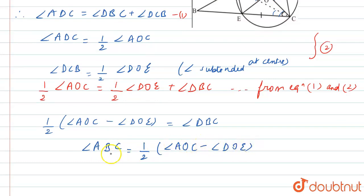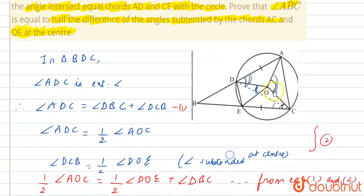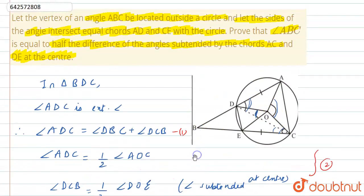This proves that angle ABC is half the difference of the angles subtended by chords AC and DE at the centre. Hence, we have proved this result.